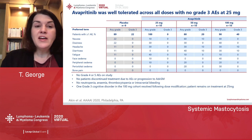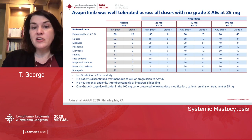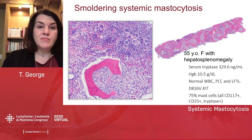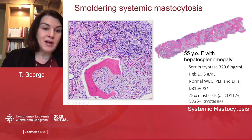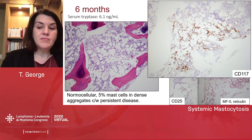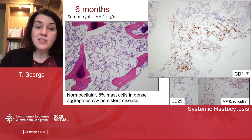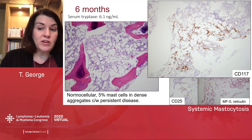Avapritinib was well tolerated across all doses with no grade 3 adverse events at 25 milligrams in this study. Looking at the bone marrow of a patient with smoldering systemic mastocytosis — approximately 75% involvement by mast cell lesions was seen at baseline. After six months of avapritinib, serum tryptase normalized. The H&E shows a now-normal cellular bone marrow, with only about 5% mast cells in the highest-concentration area by CD117, and mast cells no longer expressing CD25, with a marked decrease in reticulin fibrosis.